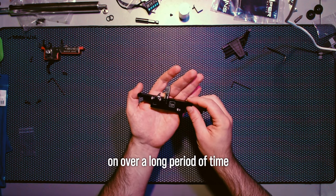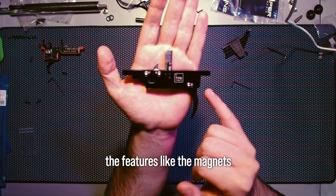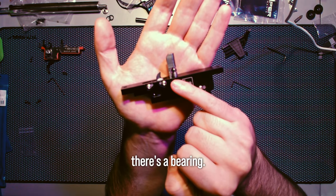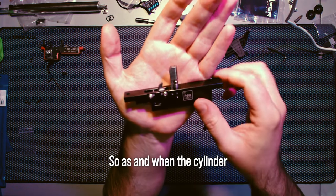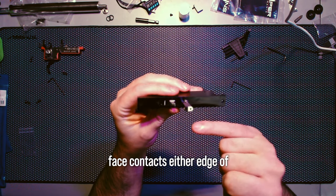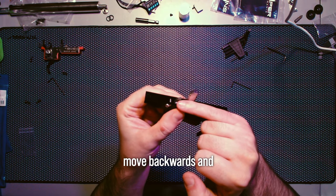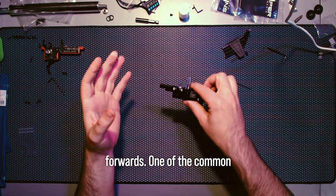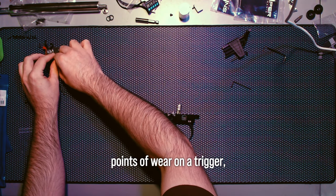Here there's a bearing so as the cylinder face contacts at either edge of this, this will move backwards and forwards. One of the common points of wear on a trigger.